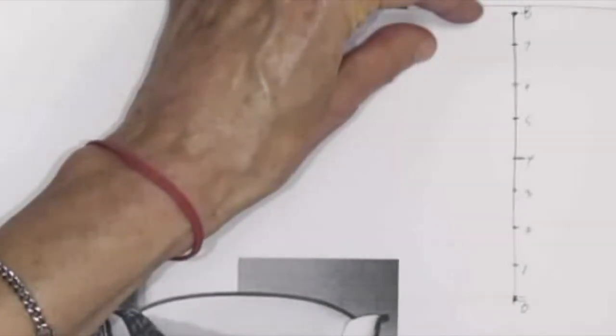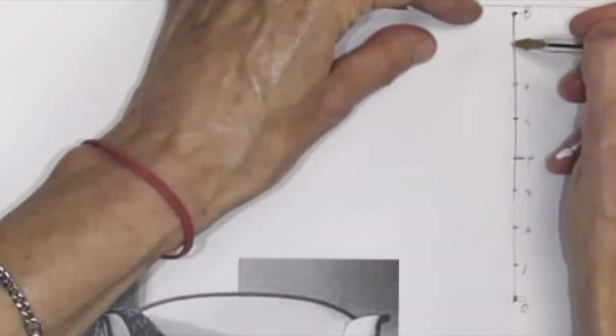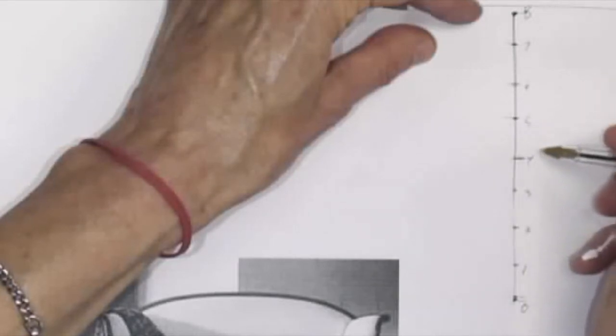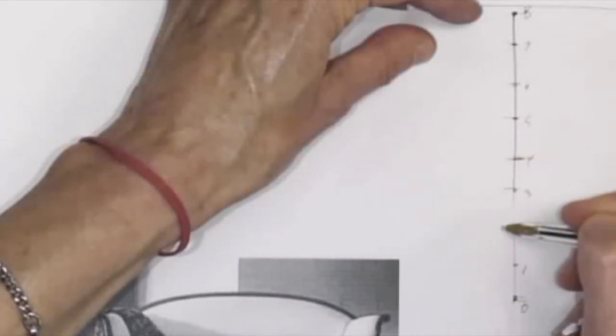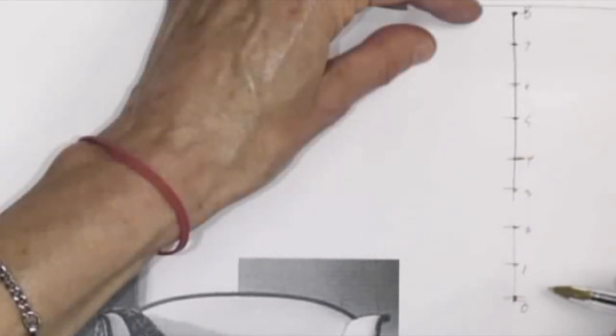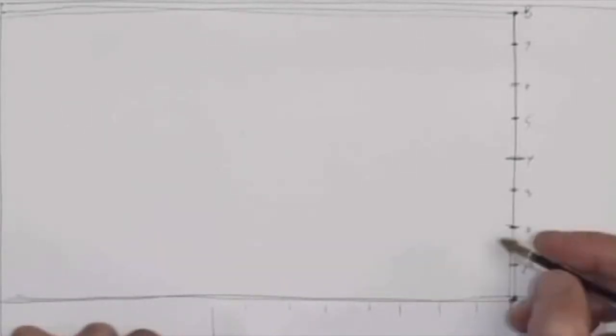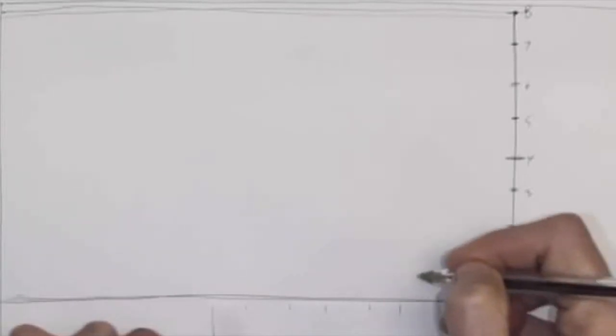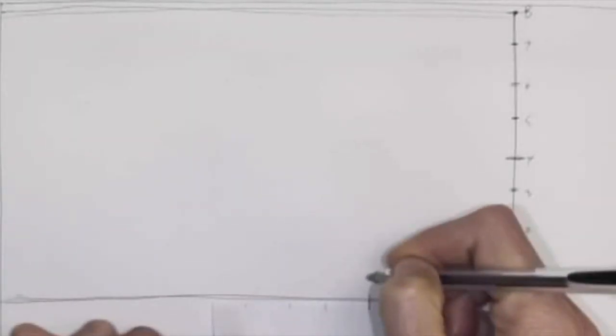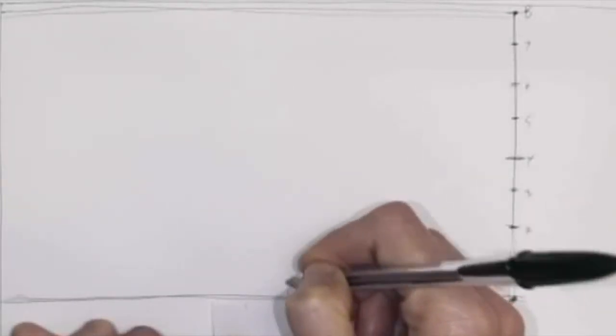And then we have to take those increments, use your scrap of paper, and take the increments along the other way. We need 12 this way.